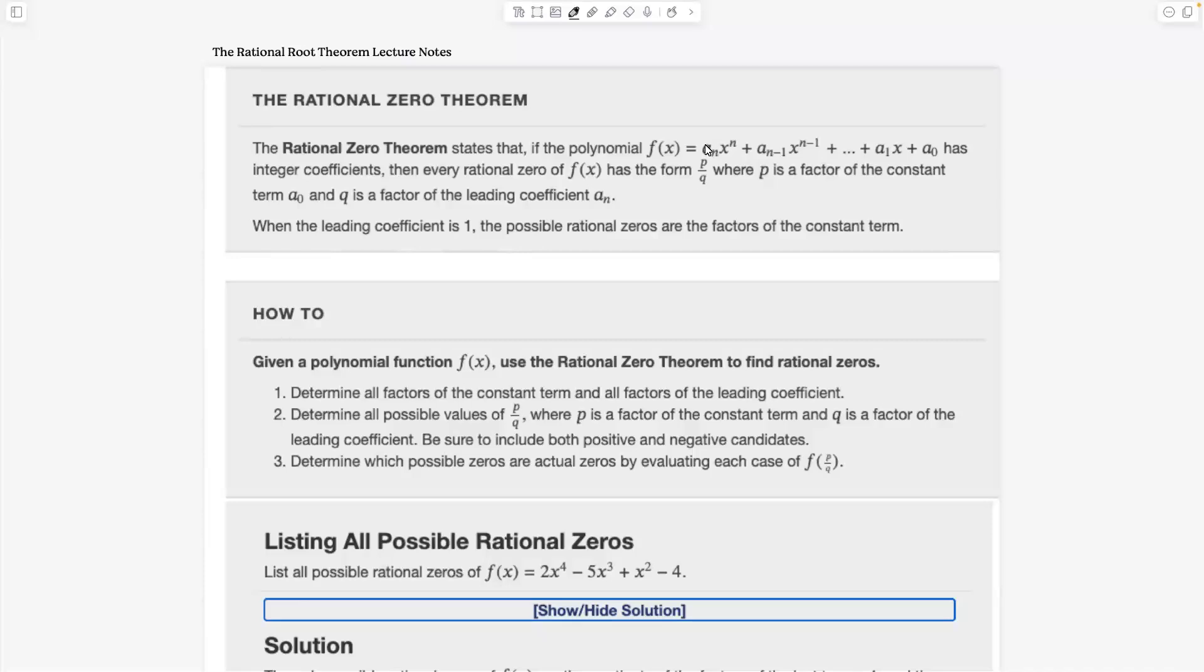So the rational root theorem says somebody hands you a polynomial with integer coefficients. You write down every possible factor of the constant term at the end. You write down every possible factor of the leading coefficient. You make all the possible fractions you can out of those two numbers, where this guy's factors are on top, his are on the bottom. That gives you a big giant list of fractions. Then if you start checking all those fractions, if there are any fractions that make this function zero, they'll be in that list.